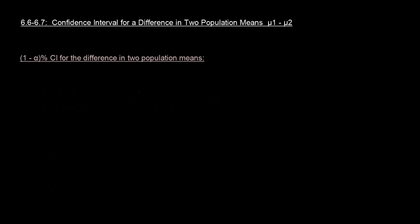All right folks, so in this video we're going to present some new information. This is from chapter 6.6, 6.7, and this is going to be a new kind of confidence interval that describes the difference in two population means.